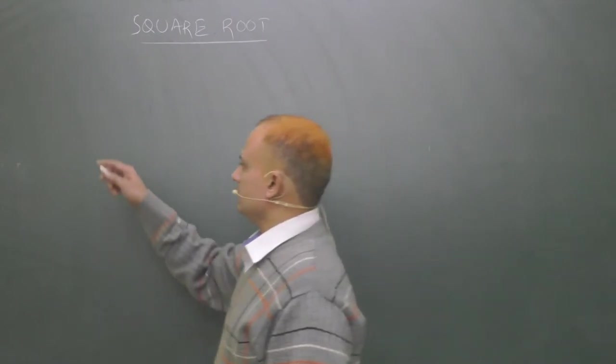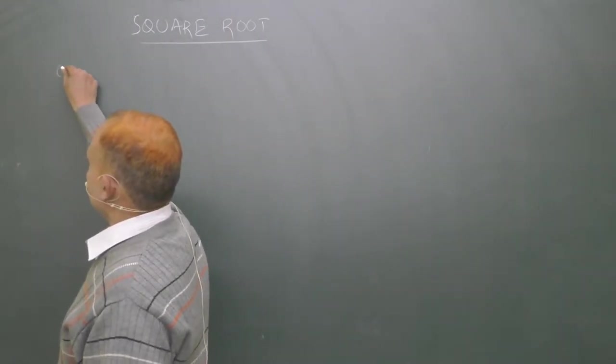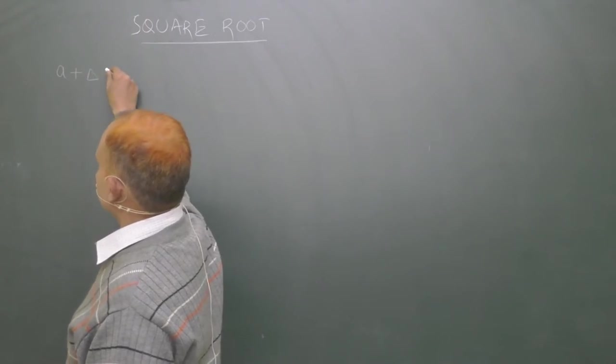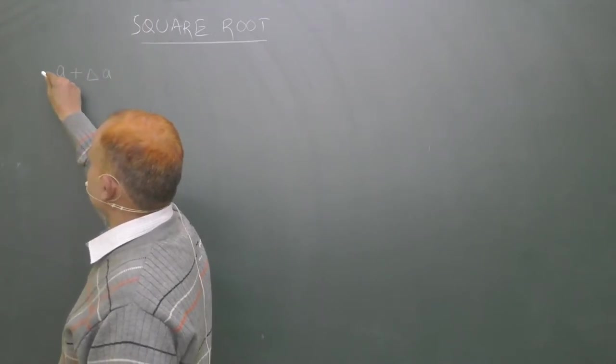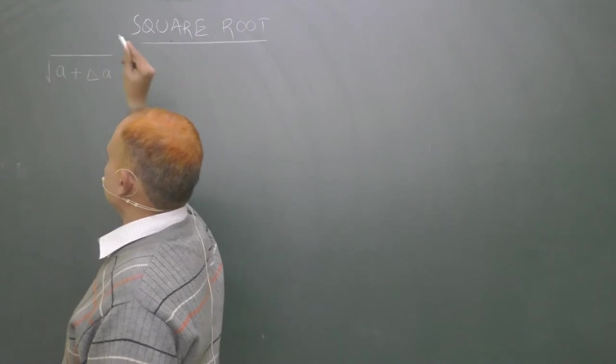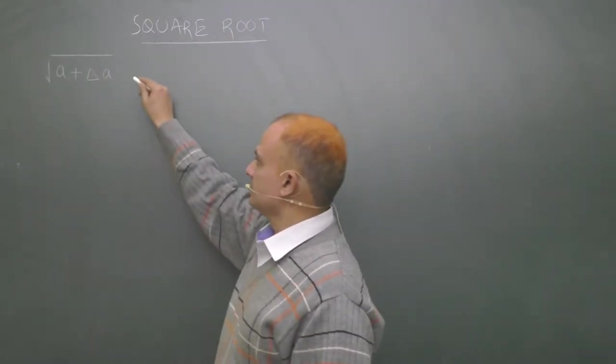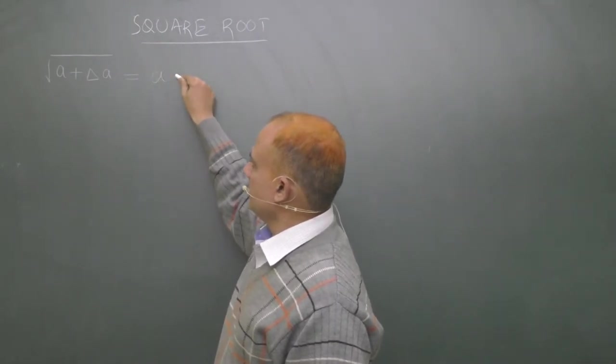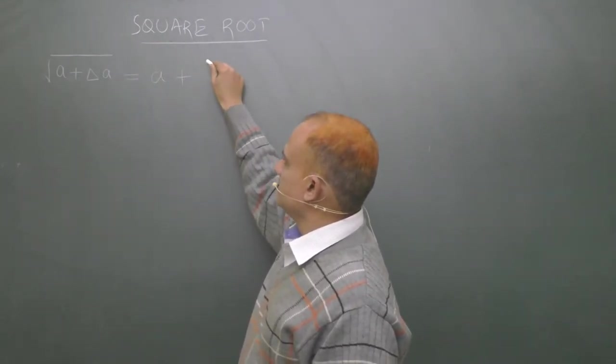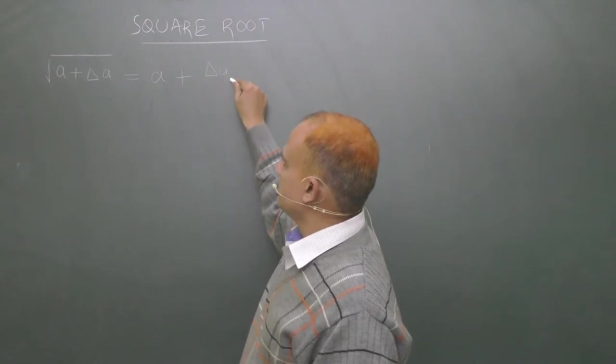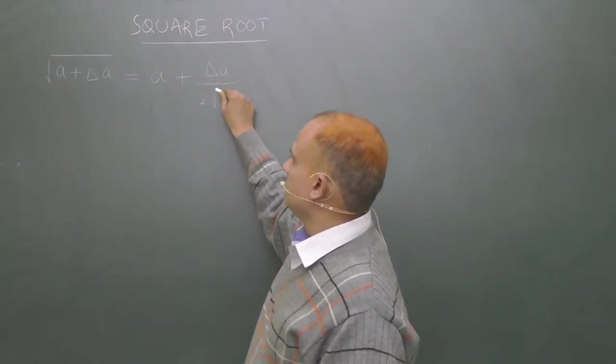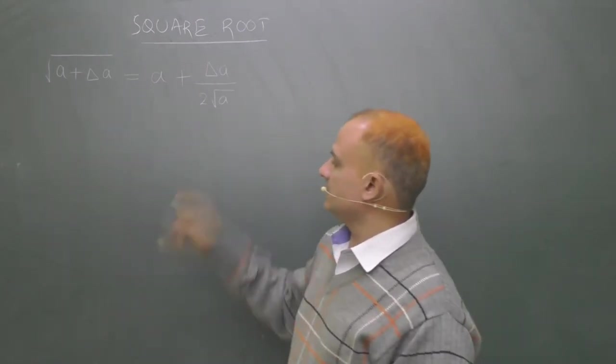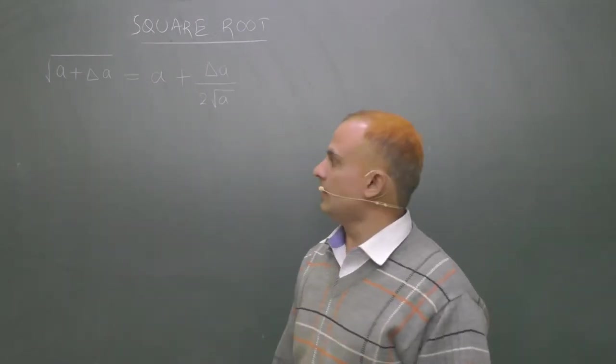You can see here the technique is: square root of (a plus delta a) is equal to a plus delta a upon 2 root a. This is the technique. Now I explain you how to use it.